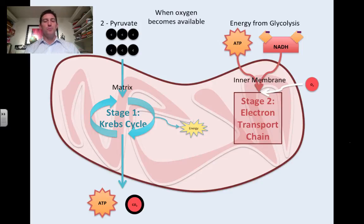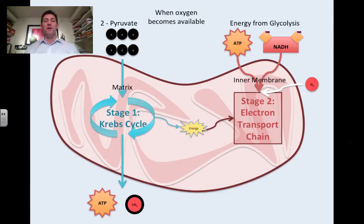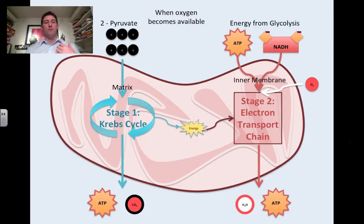Oxygen comes in there too, and these undergo something called the electron transport chain. Basically, electrons are getting pushed down the line through a series of reactions along that inner membrane. As they do, it opens up channels where ions can go in and out, and as that happens we start to reform our ATP. This requires a lot of energy — some from the Krebs cycle, some from the ATP and NADH we got from glycolysis. Out of the electron transport chain we get more ATP and we get water. Heat is also released — that's part of why your body stays around 98.6 degrees.